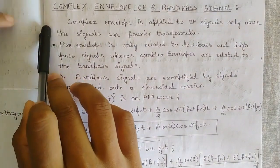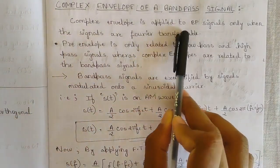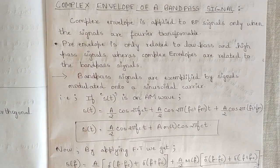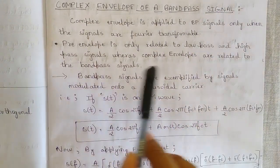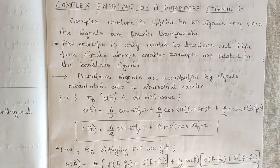Now let's get started on the complex envelope of a band-pass signal. Complex envelope is applied to band-pass signals only when the signals are Fourier-transformable — that is one condition for the complex envelope. Pre-envelope is related to low-pass and high-pass signals, whereas complex envelope is related to band-pass signals. So whereas pre-envelopes applied to low-pass and high-pass signals, complex envelopes are related only to band-pass signals.